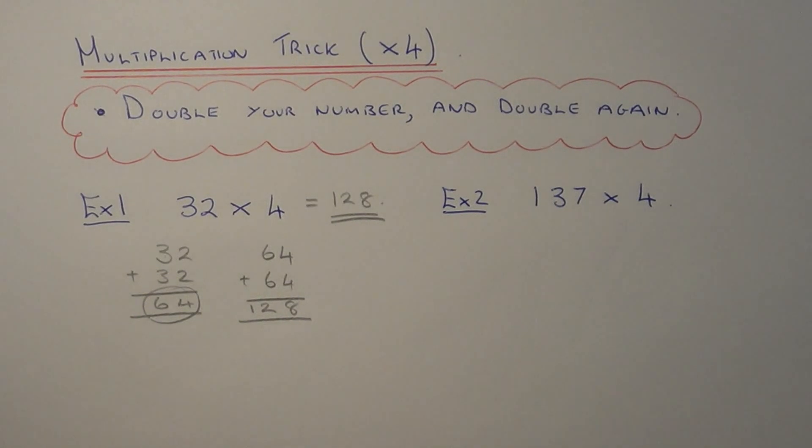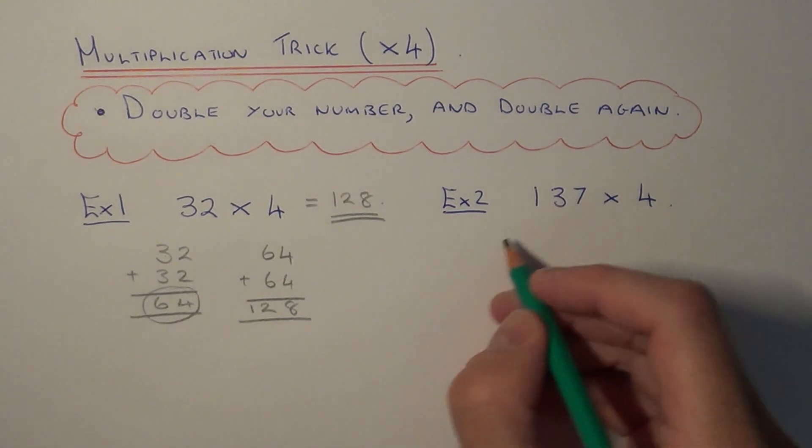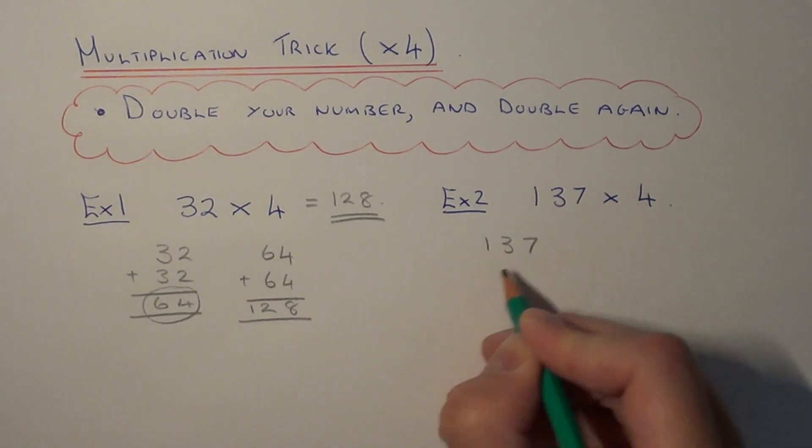So let's move on to example 2 then. This time we need to do 137 times 4. So we just need to double 137. Let's add this onto itself.